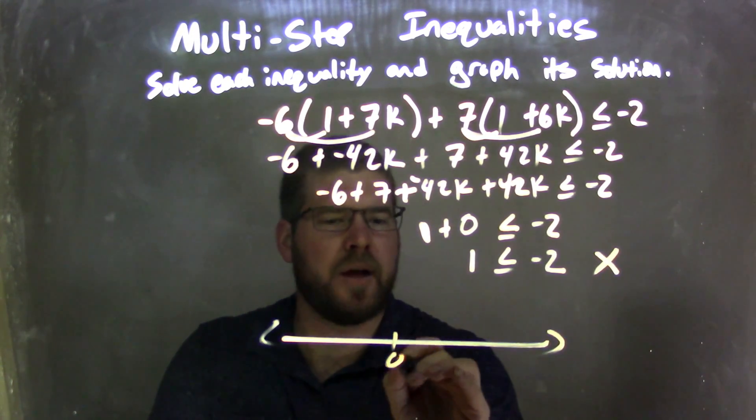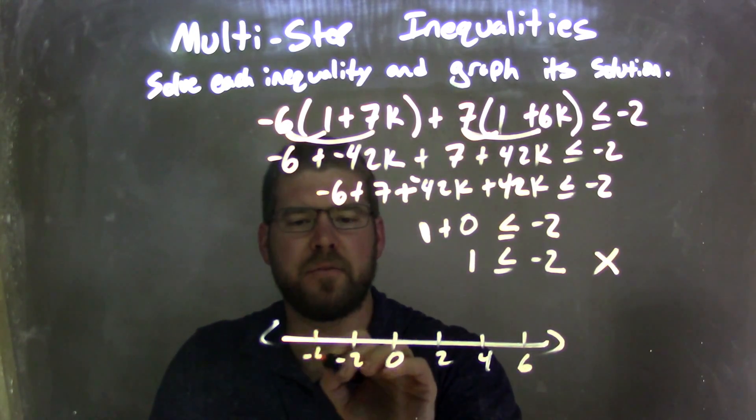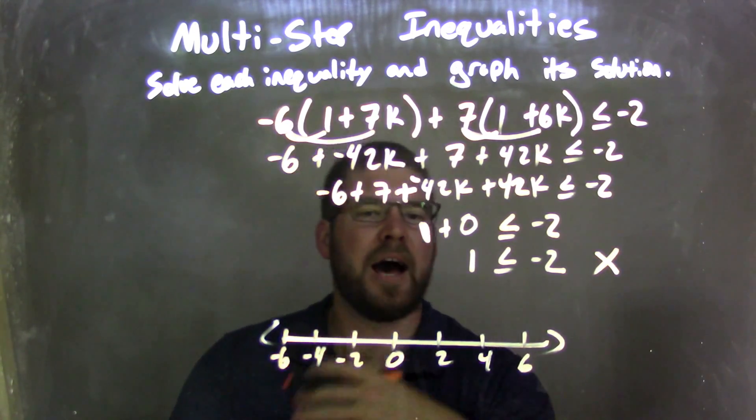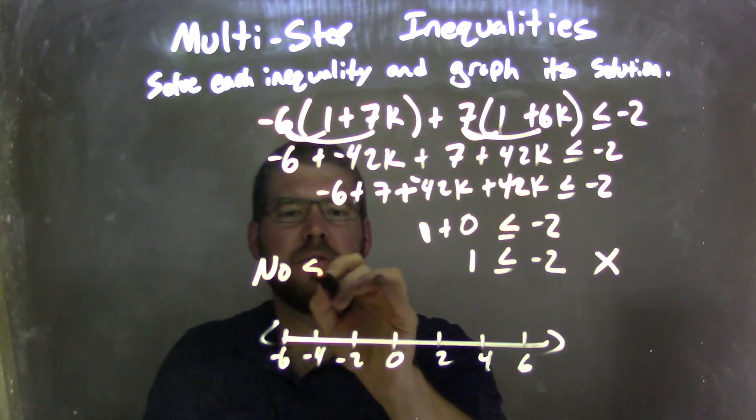Well, if I graph it on my number line here: 0, 2, 4, 6, negative 2, negative 4, negative 6. How do I graph it? Well, I can't graph it. There's actually no solution here.